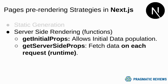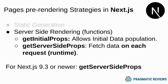For server-side rendering, Next.js provides two functions we can use in our pages: getInitialProps and getServerSideProps. If you're using Next.js 9.3 or newer, Next.js recommends using getServerSideProps instead of getInitialProps. In this video I'm going to show you how to use getServerSideProps, fetching data using Prisma ORM and Postgres.